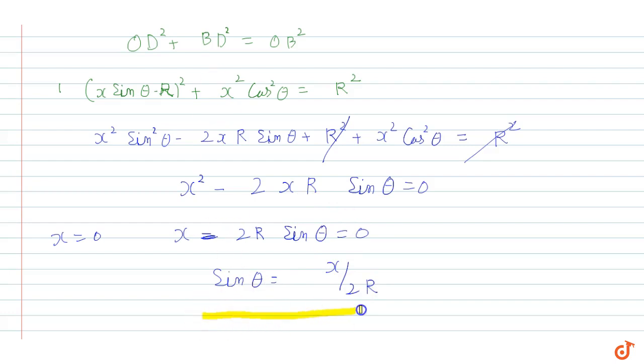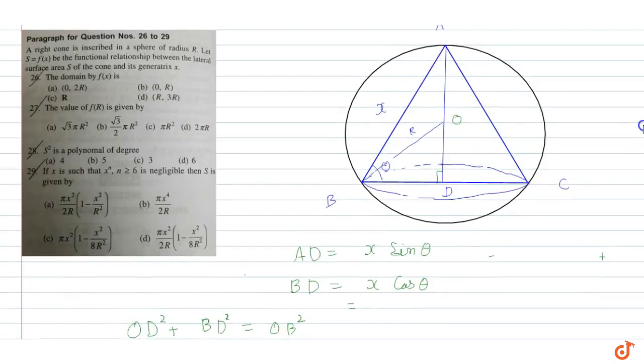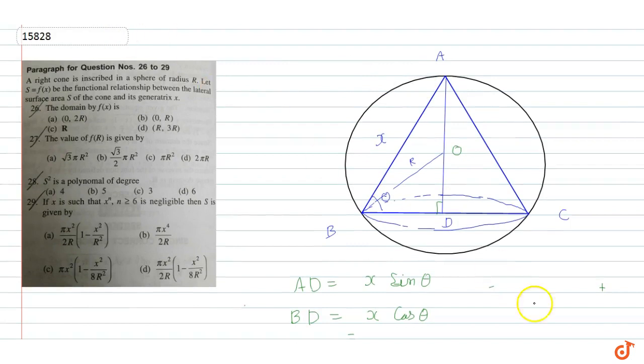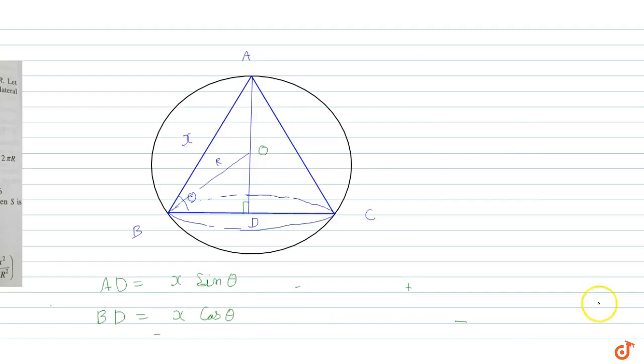Now if we see the lateral surface area, it is pi r l. So f(x) equals pi r l. The value of l is x, so pi into x. And r is the radius of the cone's base, which is BD. BD is x cos theta, so we have pi x square cos theta.